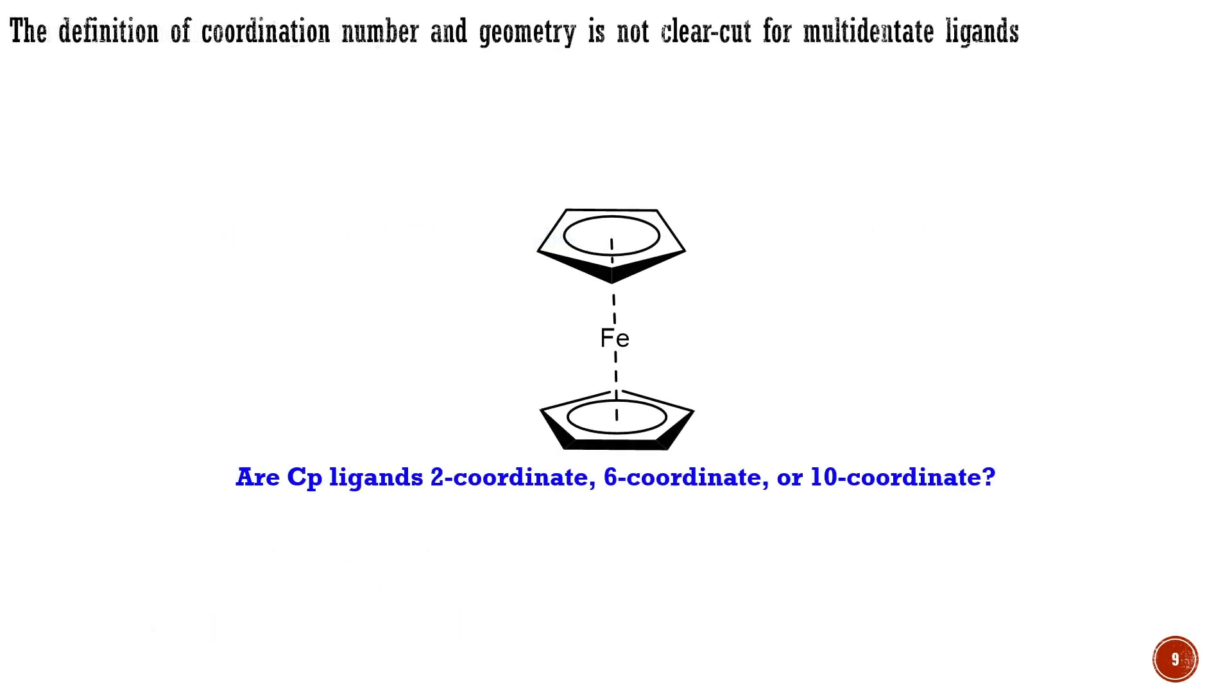It should be mentioned that the definition of coordination number and geometry is not clear-cut for multidentate organometallic ligands, as in ferrocene. Whether the molecule is 2-coordinate, 6-coordinate, or 10-coordinate is not that obvious. Indeed, there are 2 ligands, but 6 electron pairs are involved in metal-ligand bonding, and then carbon atoms are all within bonding distance of the metal. The definition most often seen involves counting the number of lone pairs provided by the ligands on the ionic model, making a coordination number of 6 for ferrocene, and we use it in what follows.